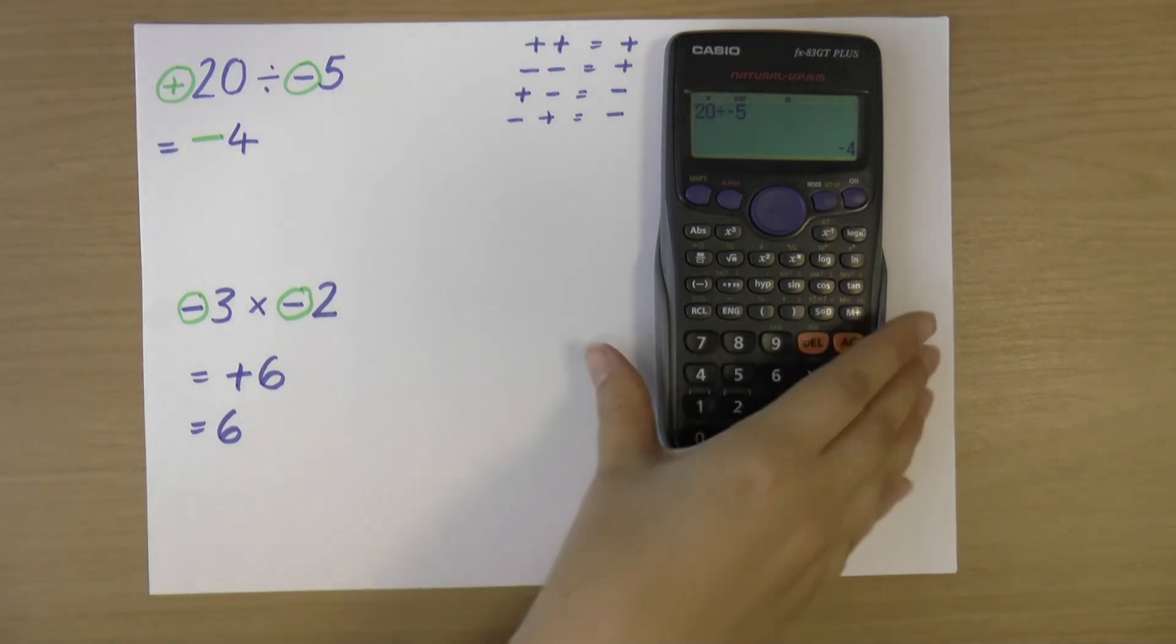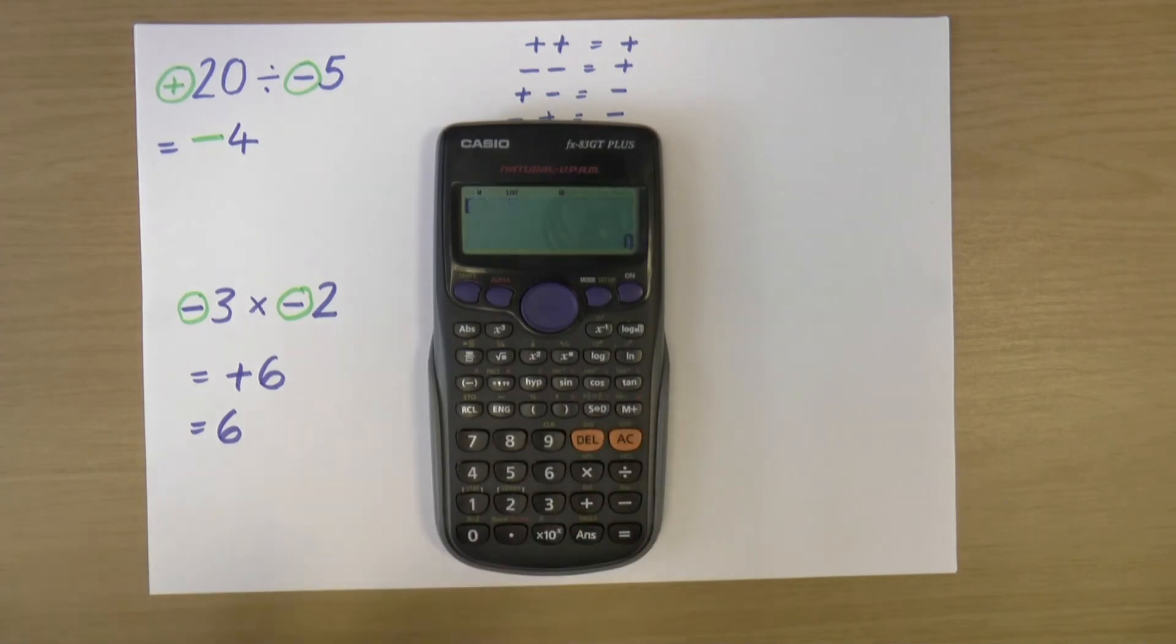And again, I could pop that into a calculator. So let's have a look at what we get. So minus three multiplied by minus two. And again, that gives us positive six.